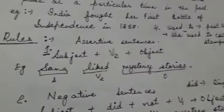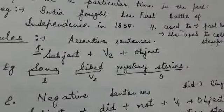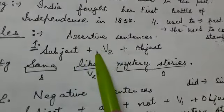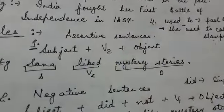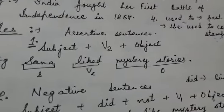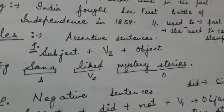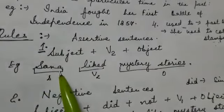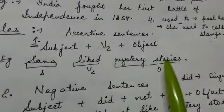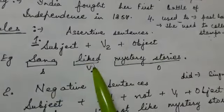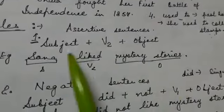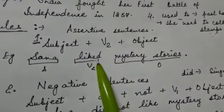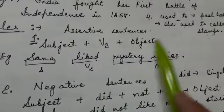Let's discuss the rules. First one is assertive. For assertive, we have to use subject with verb's second form. Isme verb ki second form use hoti hai, always, in simple past tense. For example, 'Sana liked mystery stories.' Sana here is subject, 'liked' is the second form of 'like', and 'mystery stories' is the object.